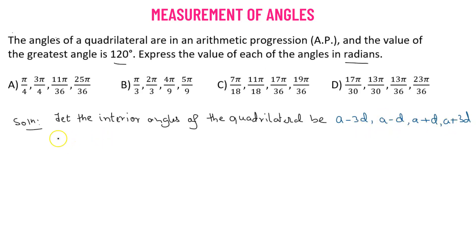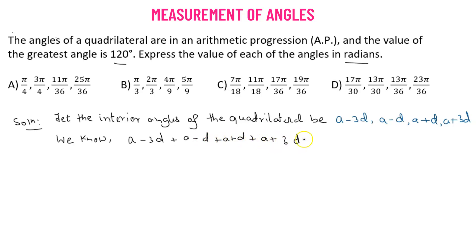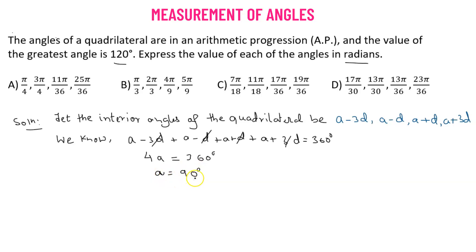We know that the sum of the interior angles of a quadrilateral adds up to 360 degrees. So if we add (a minus 3d) + (a minus d) + (a plus d) + (a plus 3d), they sum to 360 degrees. The d terms cancel out, leaving 4a equals 360 degrees, so a comes out to be 90 degrees.